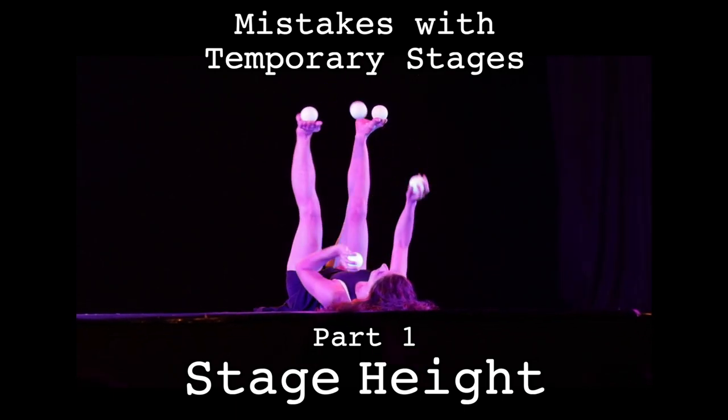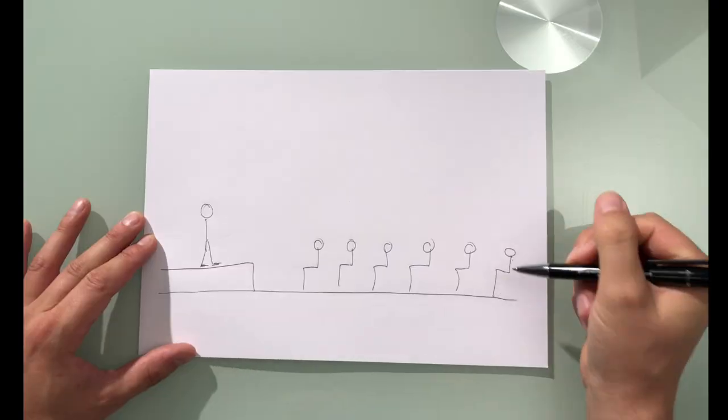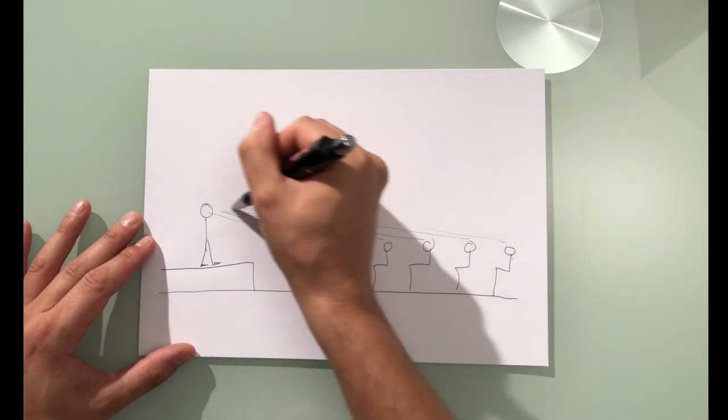The worst temporary staging mistakes at juggling events, part 1. Most temporary stages are for conferences or concerts. For both, the audience only cares about seeing the performer's top half.